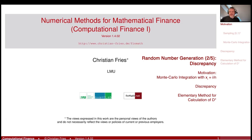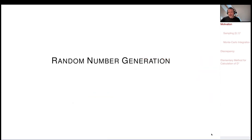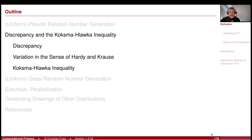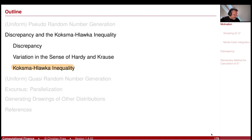Welcome to numerical methods. We are still talking about random number generation. We have discussed the pseudo-random number generators, but now I would like to discuss a property — the discrepancy — that will lead us to the so-called quasi-Monte Carlo method. More importantly, it will lead us to the Koksma-Hlawka inequality. Let's have a small teaser and look at this inequality.